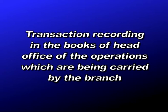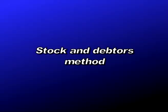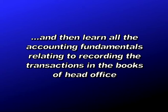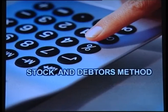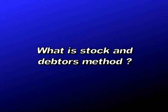Stock and debtors method is the second method by which we record transactions in the books of the head office for operations carried out by the branch. We took a small introduction of this method in our previous lecture. We shall revise the basic concept and then learn all accounting fundamentals relating to recording transactions in the books of head office. Let us first understand what stock and debtors method is.